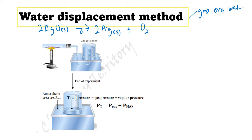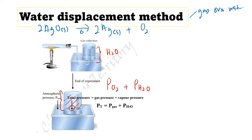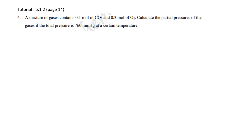In the water displacement method, we have a container filled with water. After the reaction is completed, the water level decreases because the empty space above is filled with gas. That space contains the partial pressure of oxygen gas plus the partial pressure of water vapor. So: P_total = P_oxygen + P_water vapor, which equals atmospheric pressure.